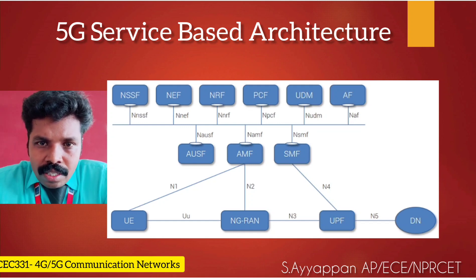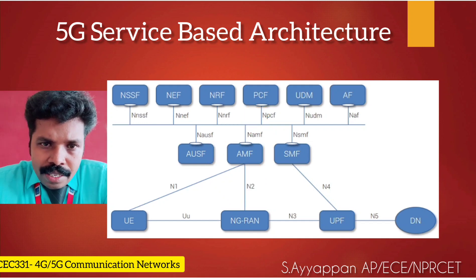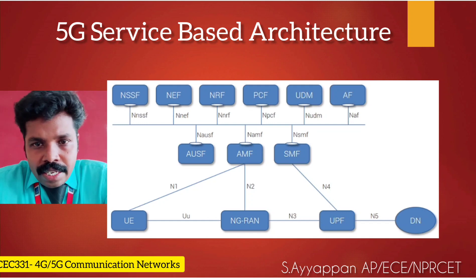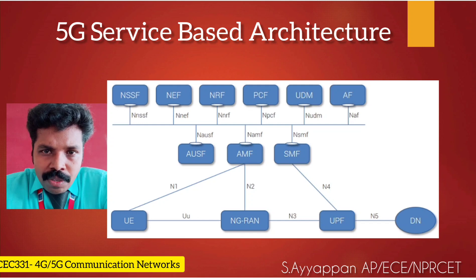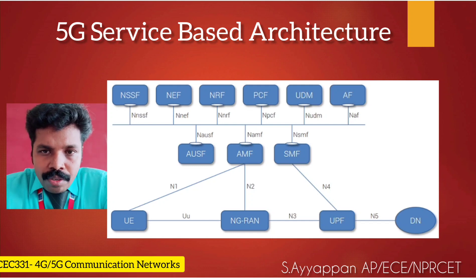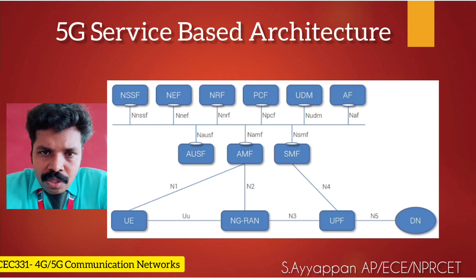We are going to talk about AMF, which is called Access and Mobility Management Function. AMF is an entry point for the core network from the radio side. It is typically responsible for mobility management and also supports NAS signaling, as well as providing connectivity towards other coordinating components.